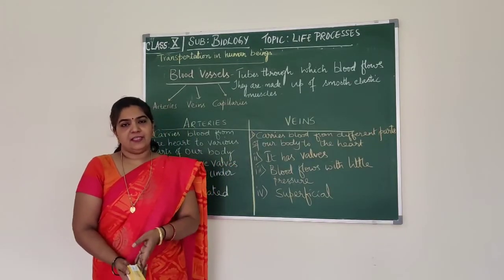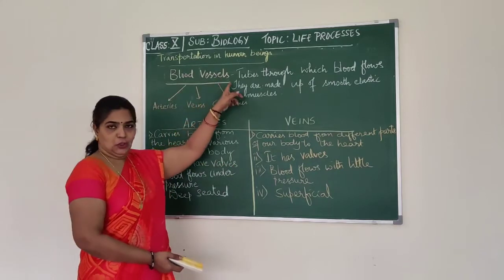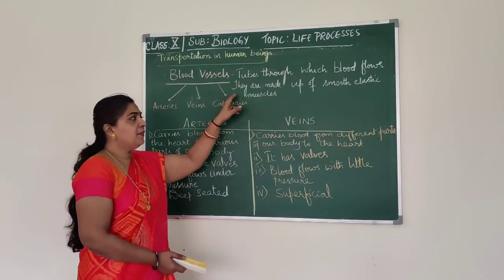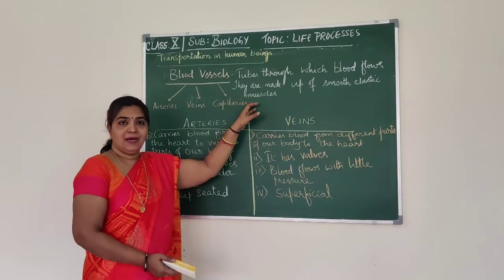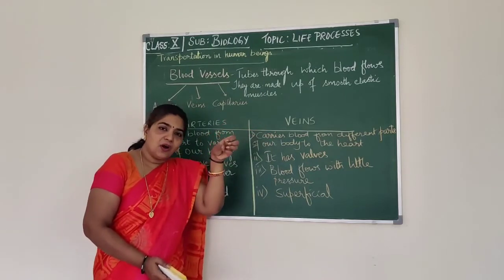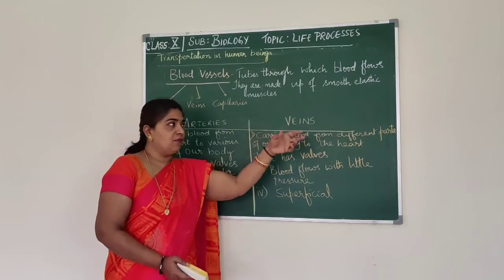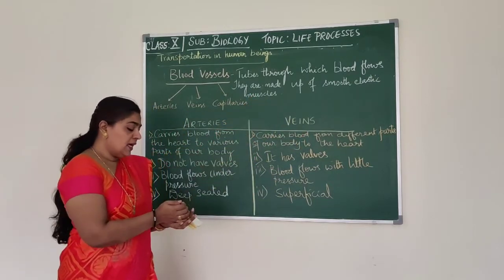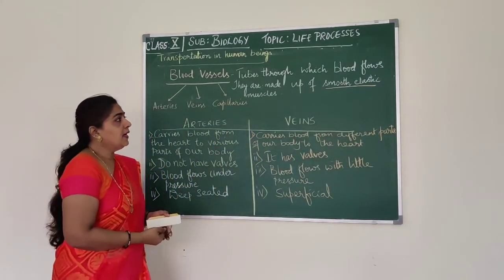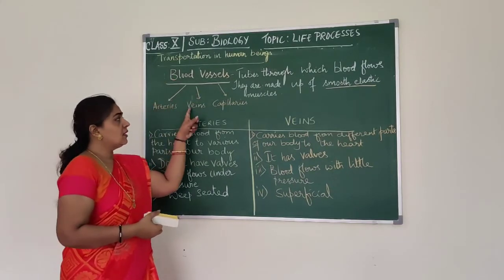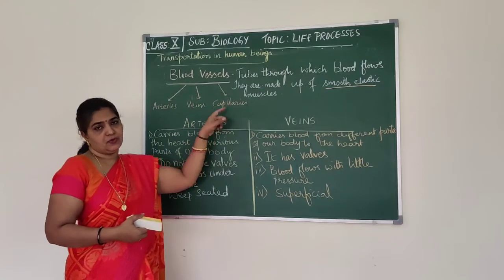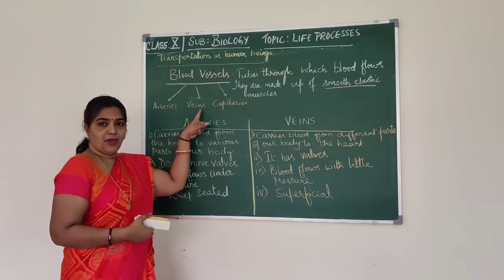Let us learn about blood vessels. Blood vessels are the tubes or pipeline structures through which the blood flows. They are made up of smooth, elastic muscle because the blood has to be pumped through the vessels — the vessels contract and relax and push the blood forward. Blood vessels are of three types: arteries, veins, and capillaries.